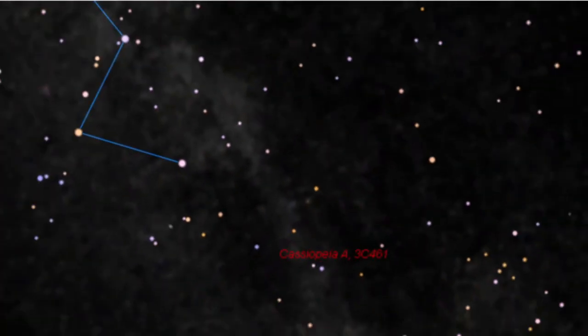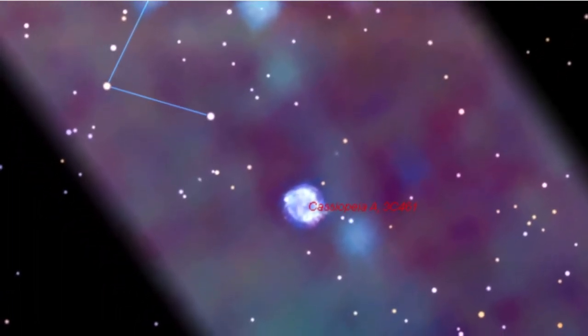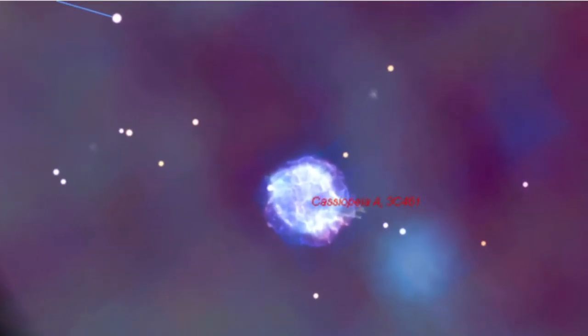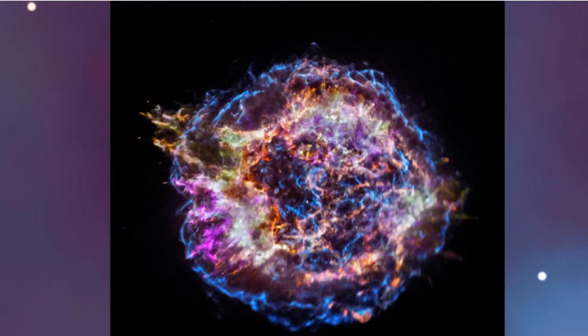Now, if your eyes could see in x-rays, the Milky Way would certainly look very different. And you definitely would want to check out the remains of an exploded star, Cassiopeia A. This is one of the most intensely studied supernova remnants. Here it is in high resolution, produced by NASA's Chandra X-ray Observatory.